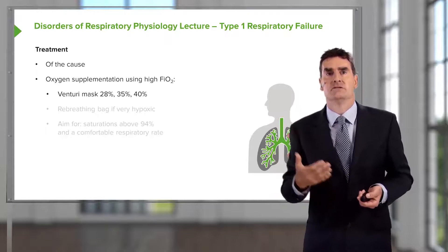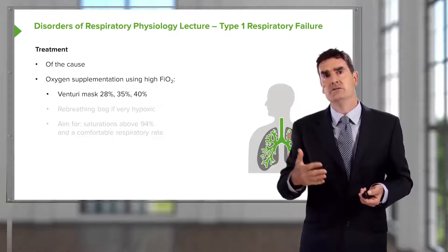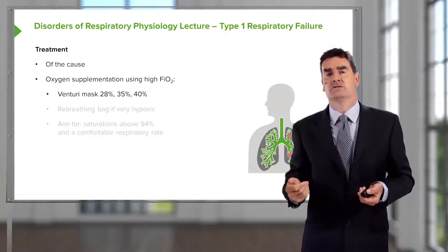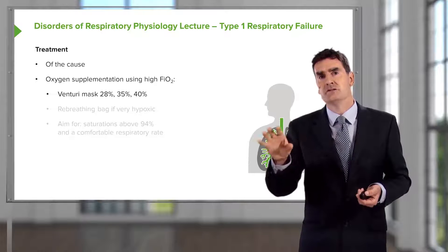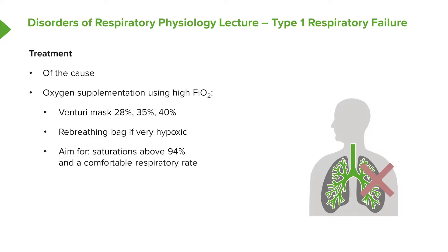Some examples are given here: 28%, 35%, 40%. We use the higher oxygen concentrations for patients with more hypoxia. If patients are very hypoxic, we may use a re-breathing bag, which allows an oxygen concentration of about 60% to be inhaled. What we're trying to do is aim for saturations above 94% and correct the hypoxia completely.